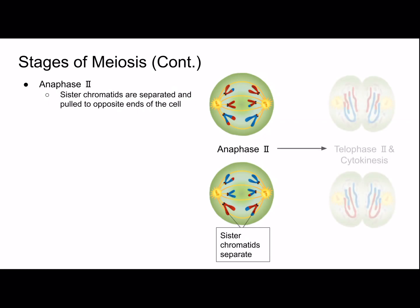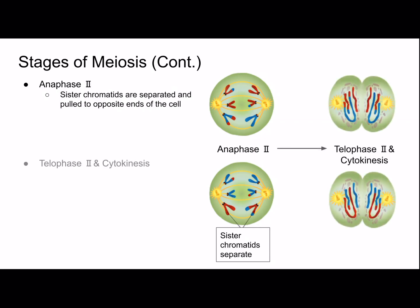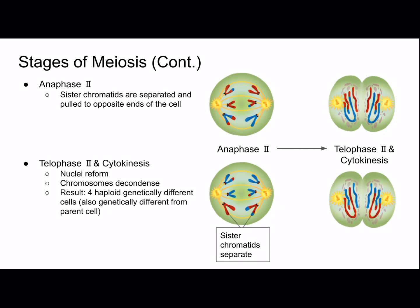We have telophase II and cytokinesis: the nuclei reform and the chromosomes decondense. Telophase is basically the opposite of prophase. We result in four haploid genetically different cells — they're also genetically different from the parent cell because during crossing over, genetic information was exchanged between them.